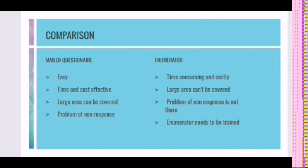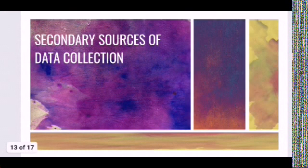Questionnaire filled by the enumerator is more time-consuming and costly, and a large area cannot be covered. However, it solves the problem of non-response. In order to get reliable information, the enumerator needs to be properly trained. So we have studied basically five methods of collection of primary data.